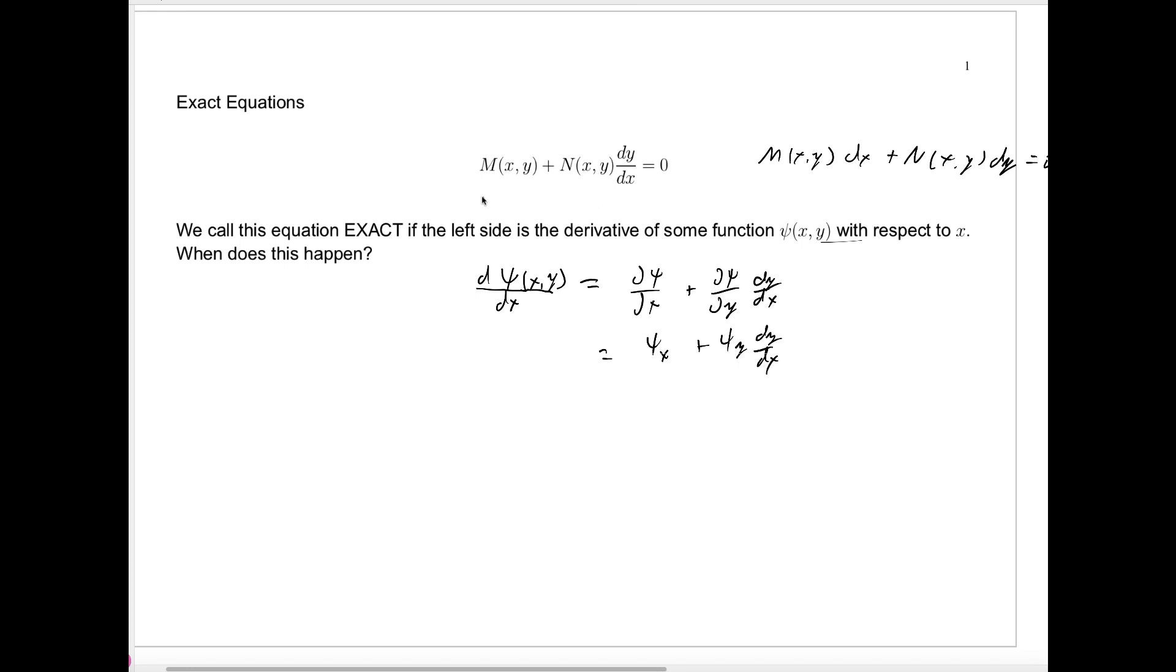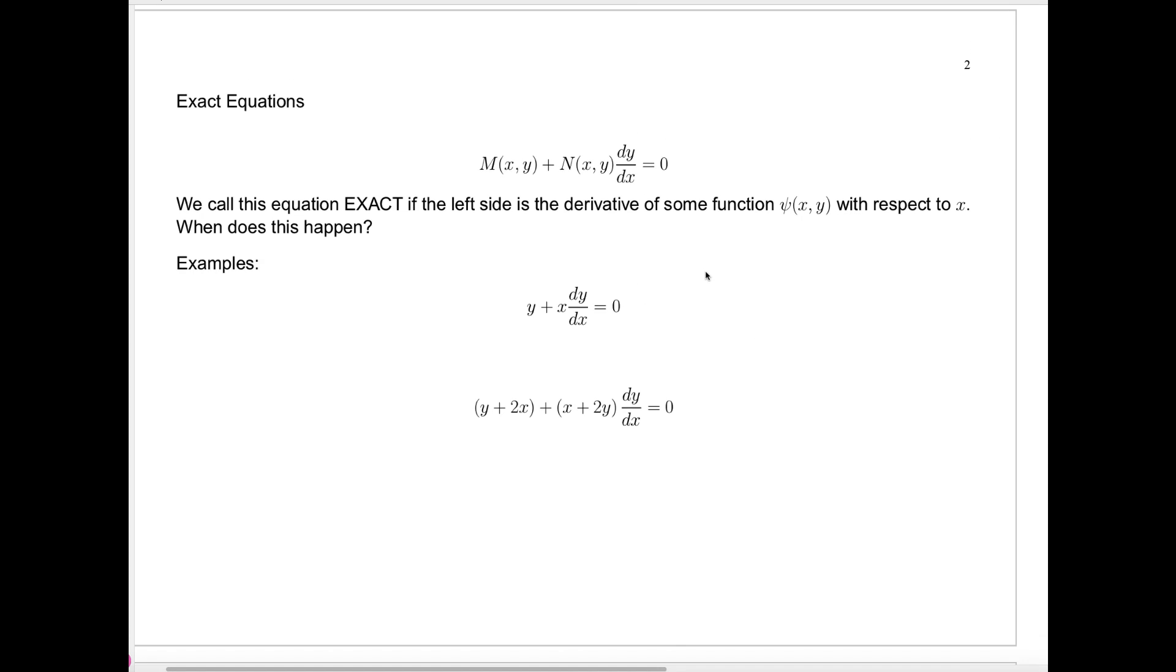So when we say that the equation written in this form is exact, we mean it's of this form: c_x is the M, c_y is the N, for some function c. Well, how can we tell if that happens? Before we start getting some general conditions to be able to tell exactly whether that happens, let's look at some examples.